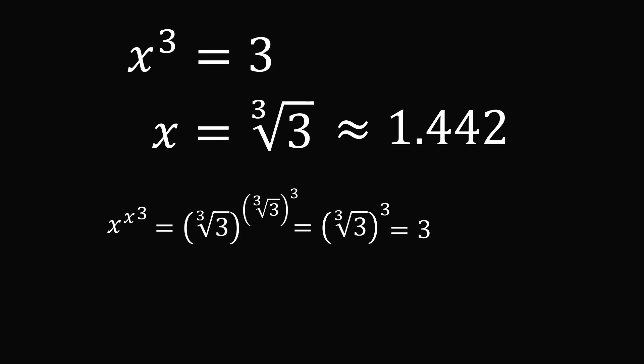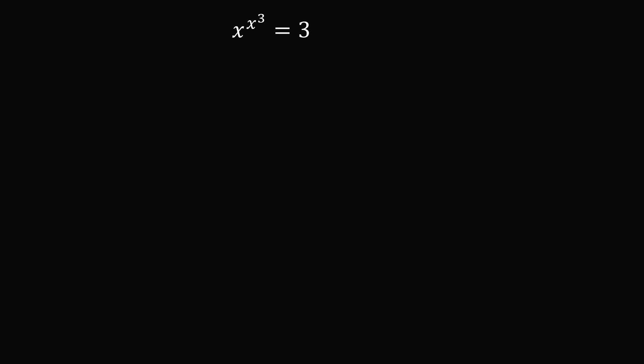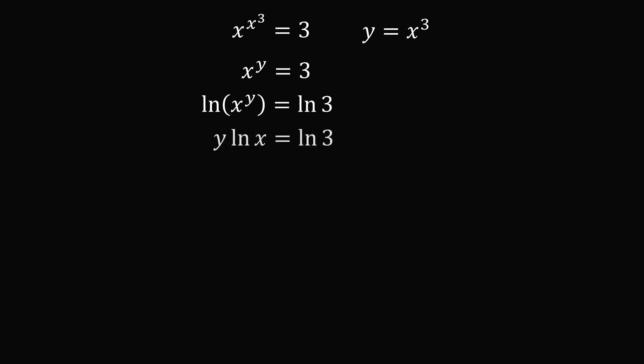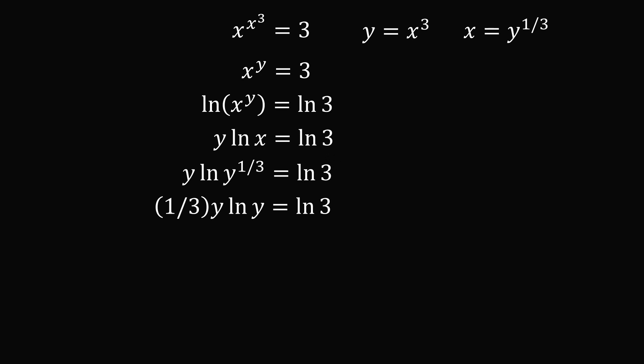If you didn't see the clever trick using exponent rules, that's perfectly fine — I'll admit I didn't see this solution myself, so I'll also present a solution using logarithms. It's a much more general method and will solve many problems of this nature. We have x to the power of x cubed equals 3. Do a substitution: let y equal x cubed. We then have x to the power of y equals 3. Take the natural log of both sides, and bring down the exponent y. If y equals x cubed, then x equals y to the power of 1 over 3. Substitute in for x — we now have an exponent of 1 over 3, which we bring down. Then multiply both sides by 3, so we have y times the natural log of y equals 3 times the natural log of 3.